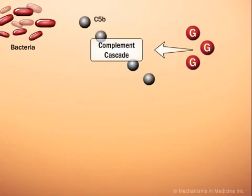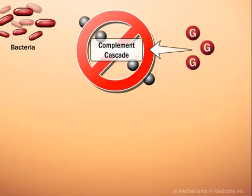Hyperglycemia inhibits the proper activation of the complement cascade, thereby reducing another pathway of the immune system.